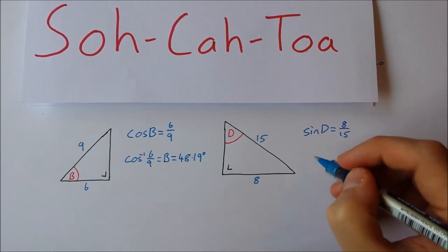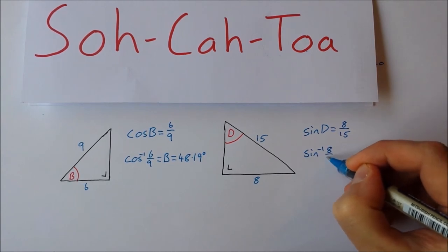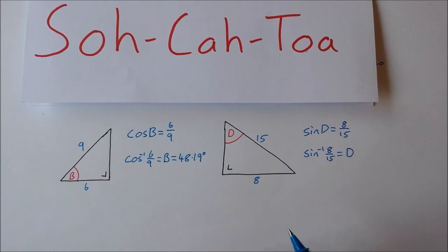To find D it's sine inverse 8 over 15. That will give my angle D. Try that on your calculator now.